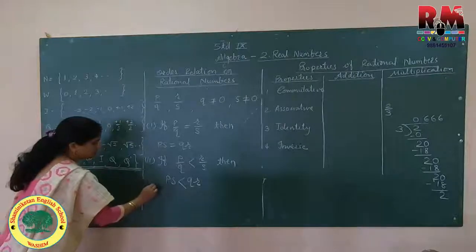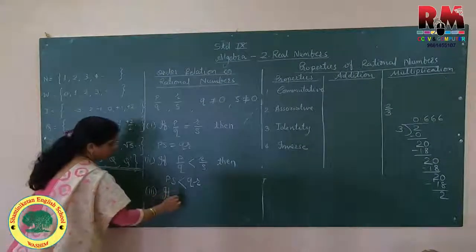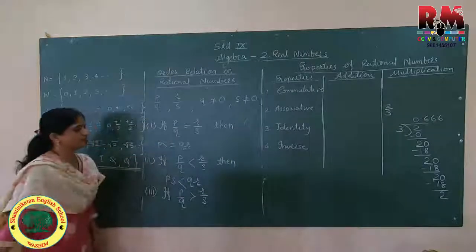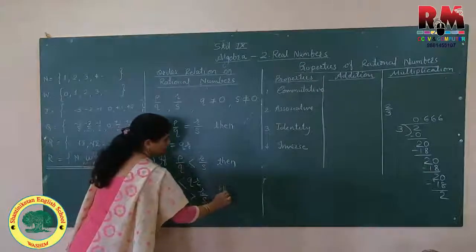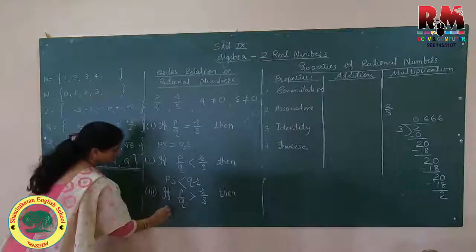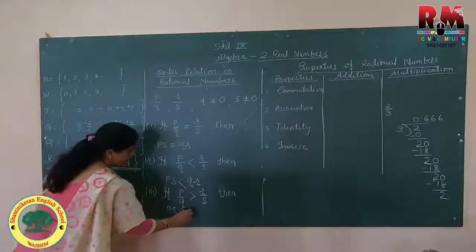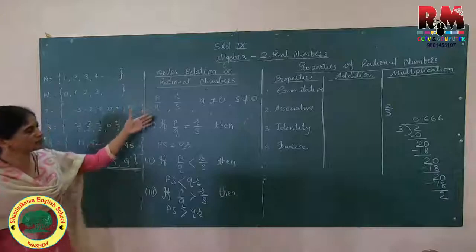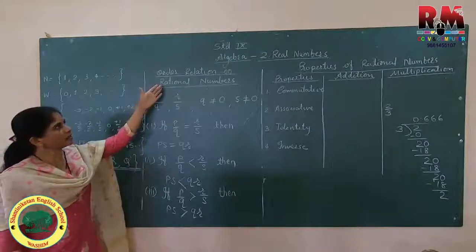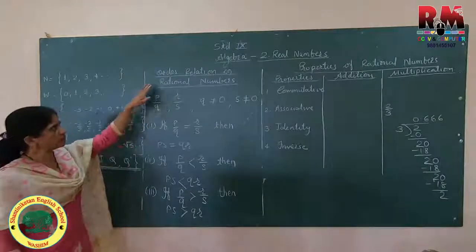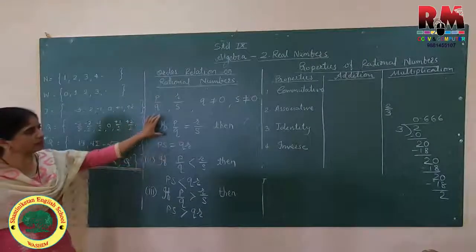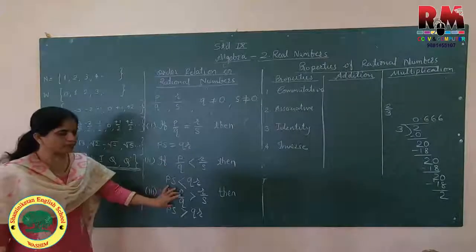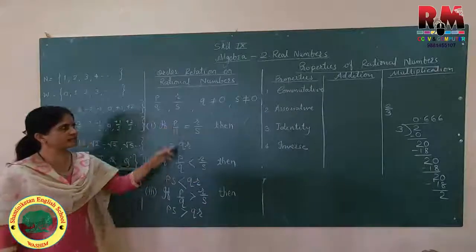Third condition: if P upon Q is greater than R upon S, then cross multiply — P times S is greater than Q times R. These are three important order relations on rational numbers: P by Q equals R by S, P by Q is less than R by S, and P by Q is greater than R by S. Keep these in mind.